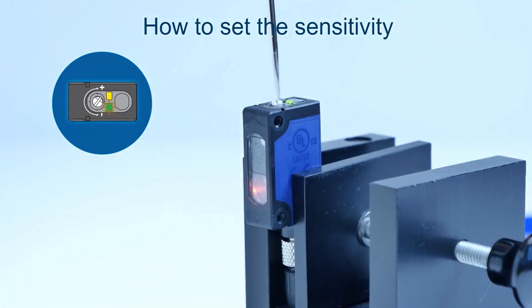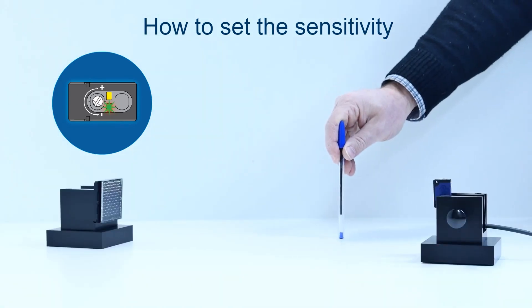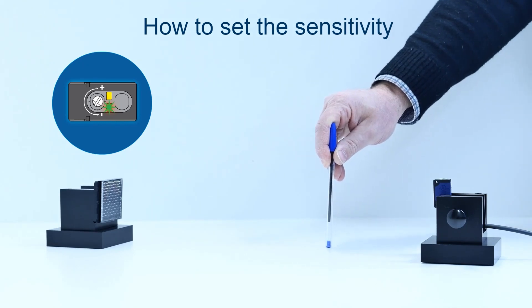Finally, decrease the sensitivity until the output status can change in the presence of the object and the green stability LED remains lit.